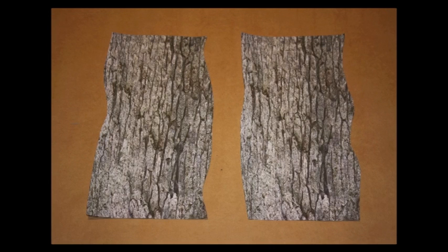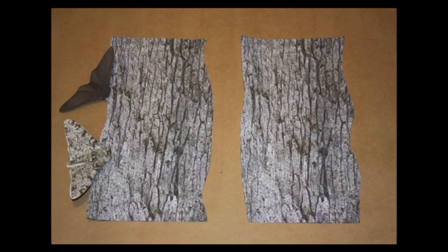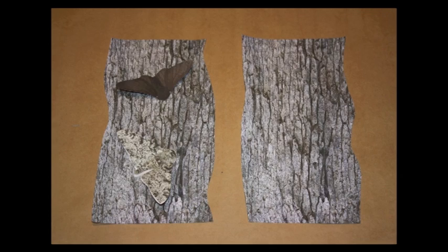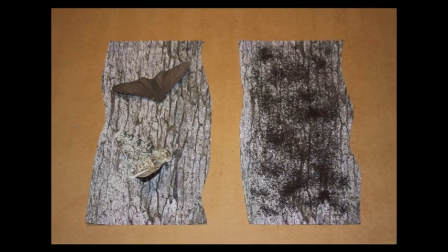In the 1800s, the peppered moth gradually changed from having a population of mostly light-colored moths to there being a majority of dark-colored moths. Because what else was happening in England in the 1800s? The industrial revolution.